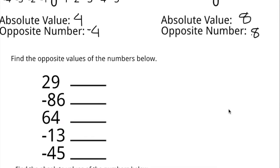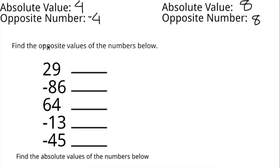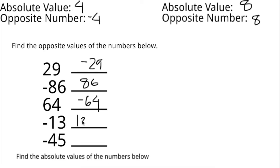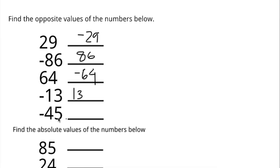So let's try this without the number line. We have to find the opposite values of the numbers below. Again, you just switch the signs. So twenty-nine turns into negative twenty-nine. Negative eighty-six turns into positive eighty-six. Sixty-four turns into negative sixty-four. Negative thirteen turns into positive thirteen. And negative forty-five turns into positive forty-five.